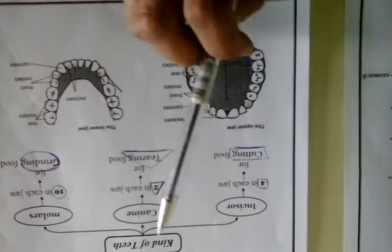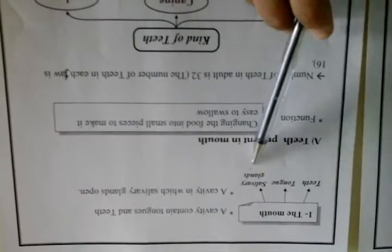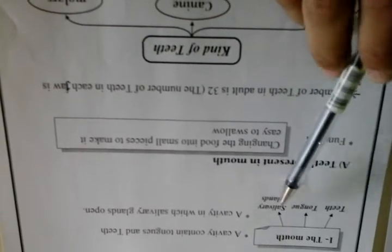That's the component of the mouth. As we said previously, the mouth contains teeth, tongue, and salivary glands. If we open our mouth in the mirror, we will see teeth and tongue, and there are also three pairs of salivary glands.